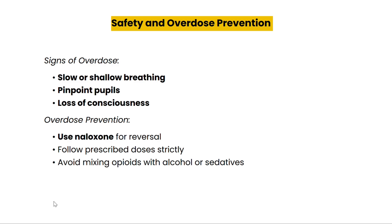To wrap up, let's quickly answer some common questions. How does morphine relieve pain? Morphine relieves pain by binding to mu opioid receptors in the brain and spinal cord, blocking pain signals. What are the side effects in elderly patients? Common side effects can include increased sedation, constipation, and a higher risk of falls. Is morphine safe for long-term use? While effective, long-term use carries risks of tolerance, dependence, and potential overdose, so it should be monitored closely.